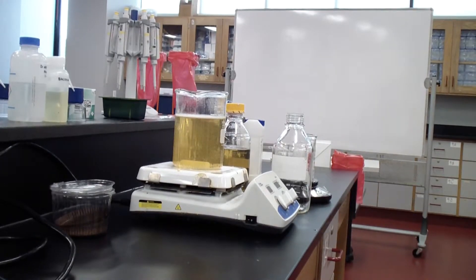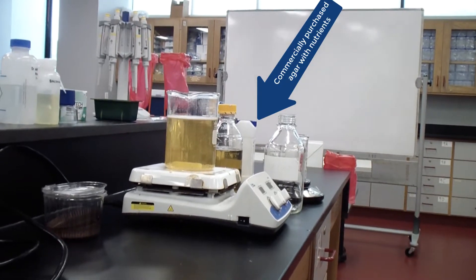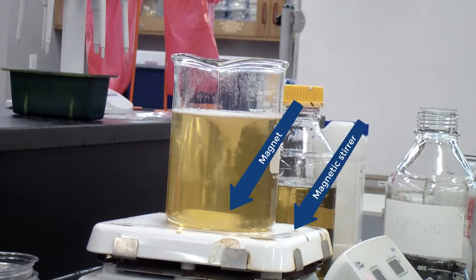To prepare agar plates, commercially purchased agar with nutrients is mixed with water and heated until boiling until the powder is completely dissolved. We use a magnet and a magnetic stirrer to mix the medium continuously.